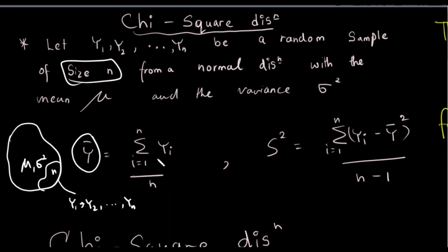So we can define the sample mean and also the sample variance. If you want to talk about the mean as a random variable, then you can talk about the sample variance. The sample variance is defined. If you want to talk about the chi-square distribution, then you can talk about the sample distribution.